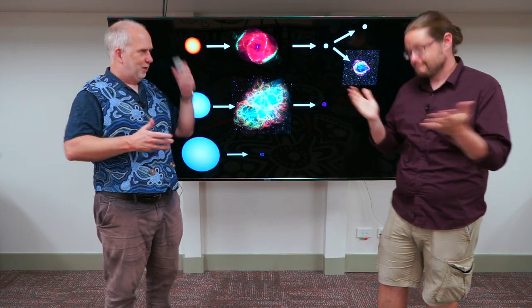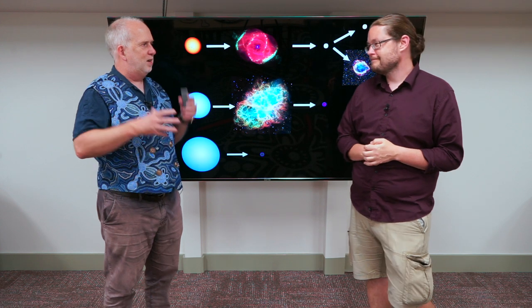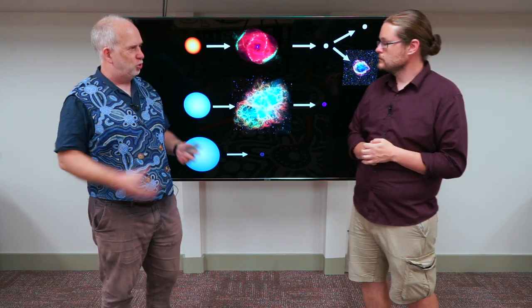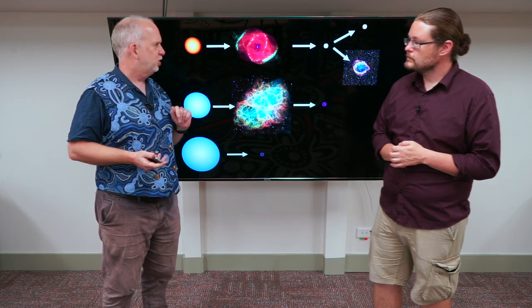So we've seen the stars bounce around the HR diagram. They usually end up at some red giant phase with a dense core and this tenuous outer region that often gets blown away. But where do they actually end up?